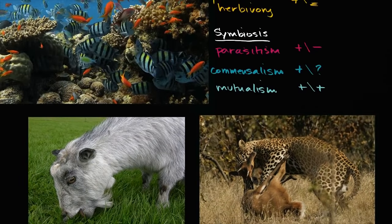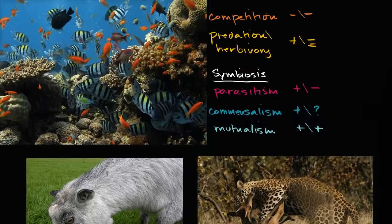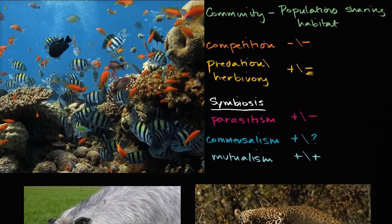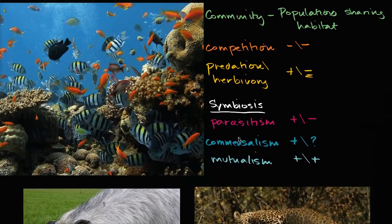So those are all the different types of inter-specific interactions. I encourage you: look around you at the world, and don't just limit yourself to animals — think about bacteria, think about plants. And think about, within a habitat, what all the different inter-species interactions are and how you might want to classify them.